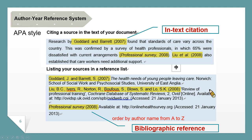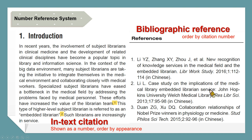There are two reference systems commonly used in scientific writing. One is the author-year reference system — this is the example of APA style. Here's the in-text citation, which includes the author's name and publication year. Bibliographic references appear at the end of the article, ordered by author name from A to Z. Another is the number reference system. The in-text citation is shown as a number, ordered by appearance. Bibliographic references appear at the end of the article, ordered by the citation number.